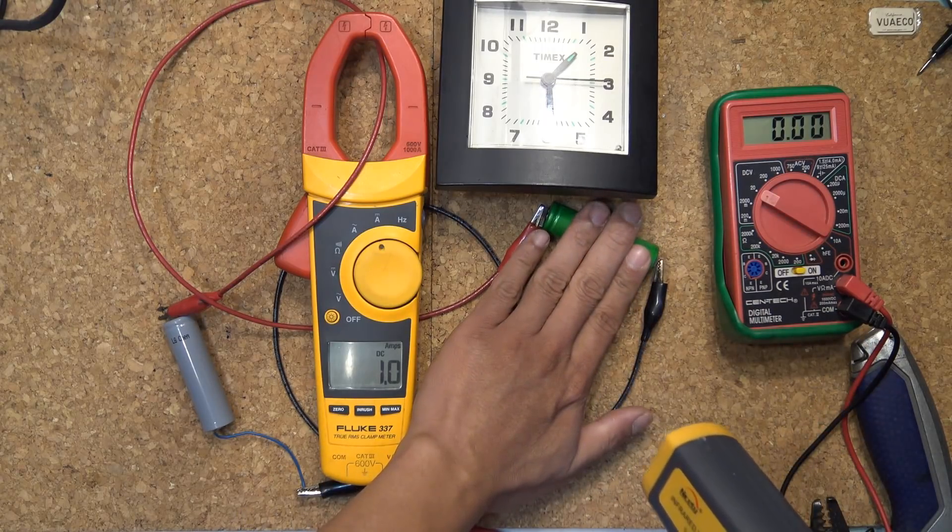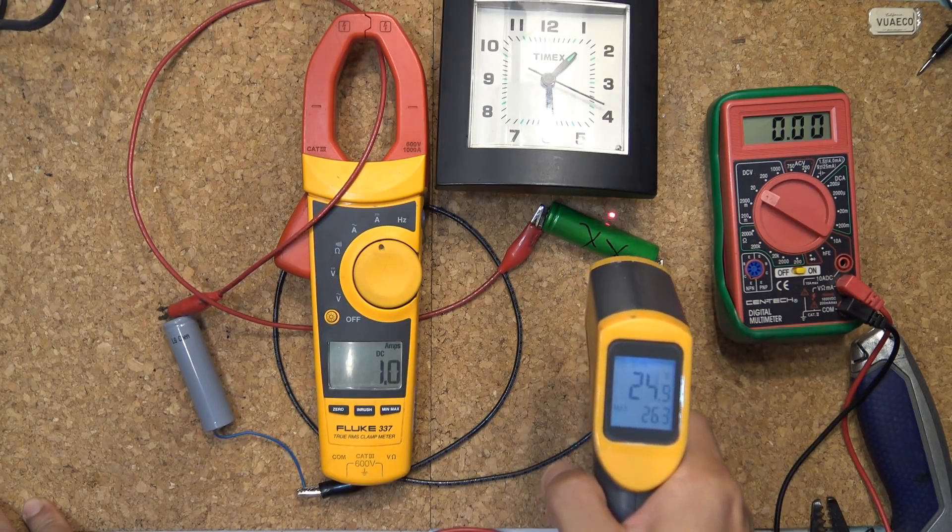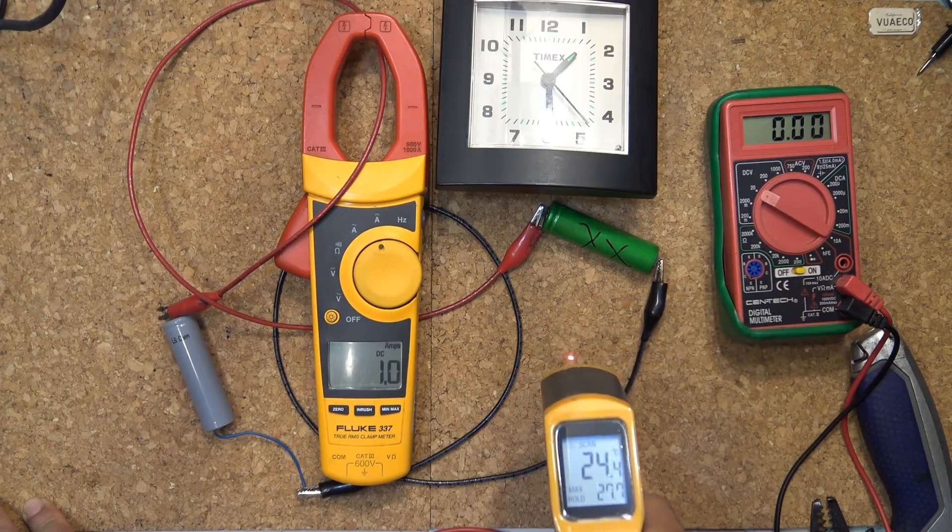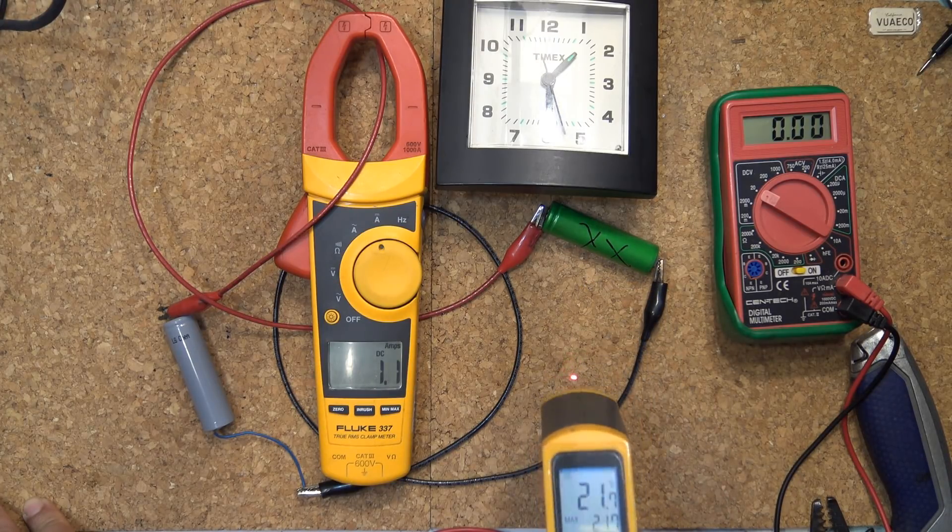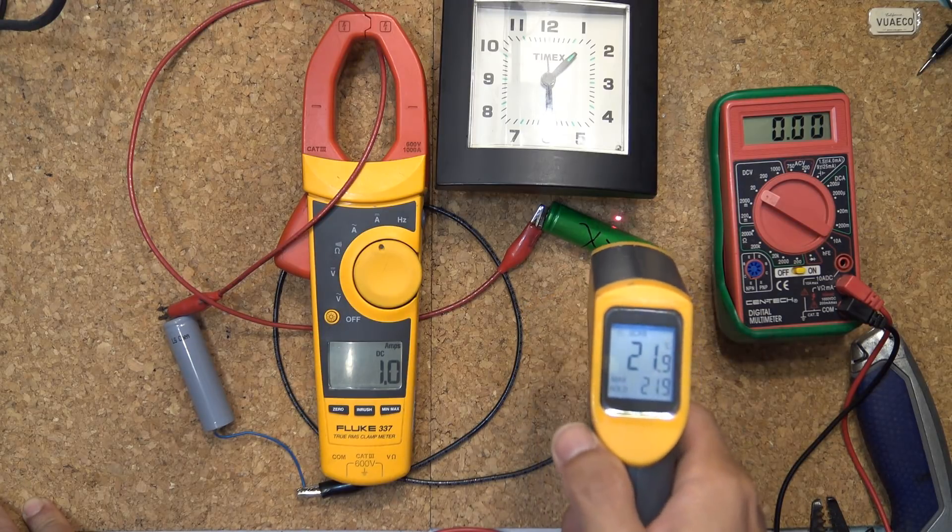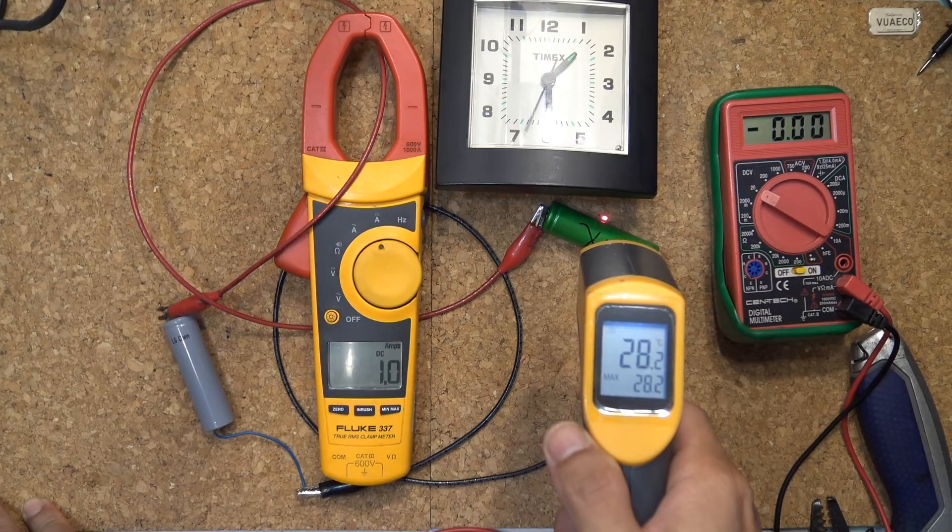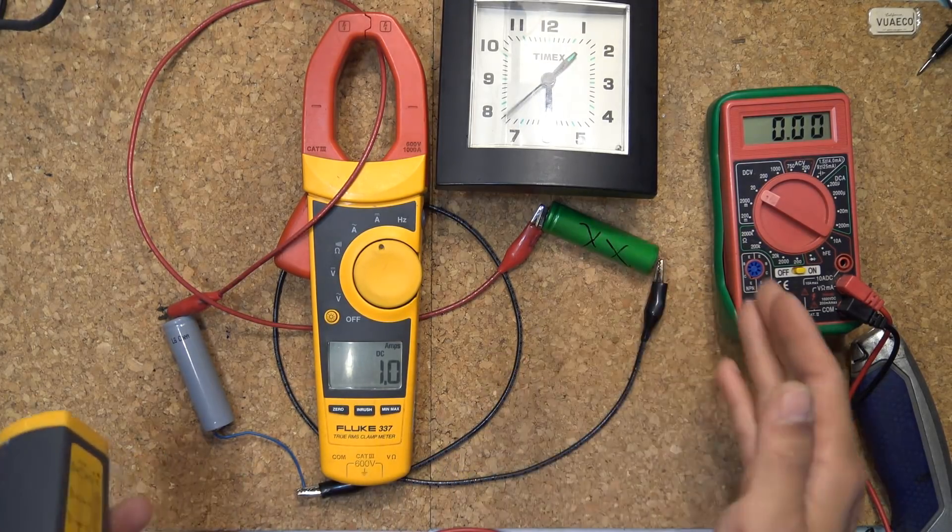And the battery does get warm, but not hot at all. See there, 26 degrees, 27 degrees Celsius. Room temperature is about 22 degrees Celsius. Battery temperature, 27, 28 degrees Celsius. So it gets warm, but doesn't get hot.